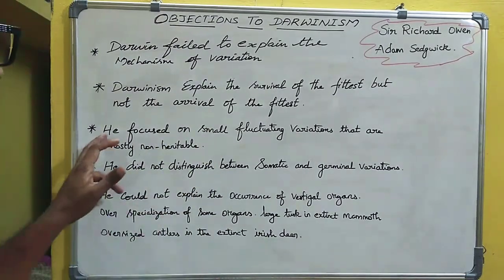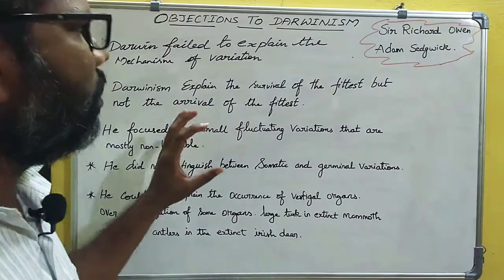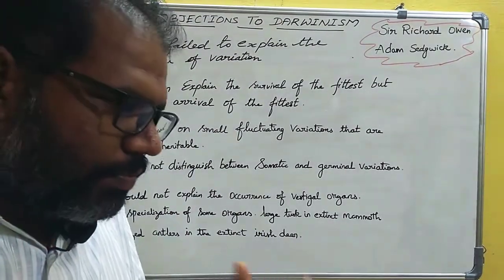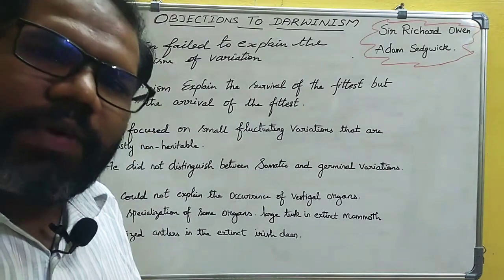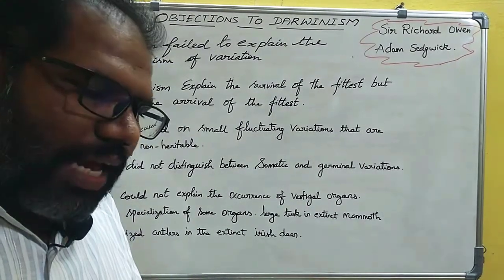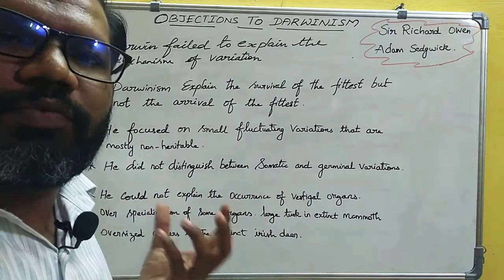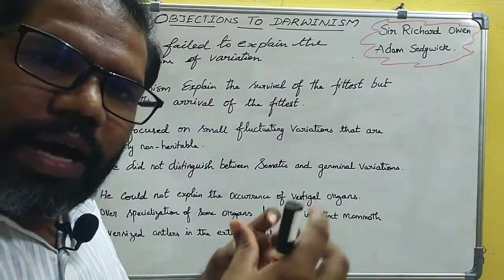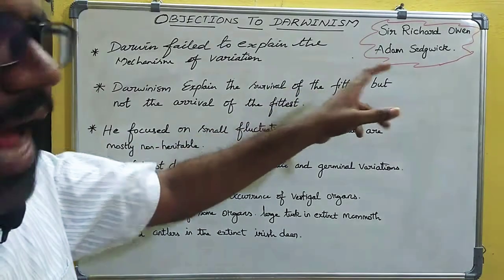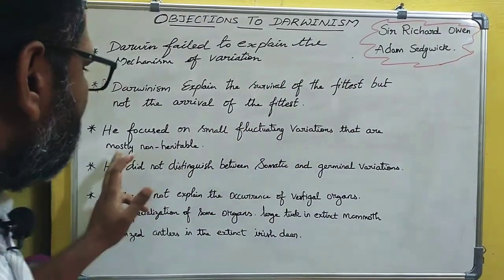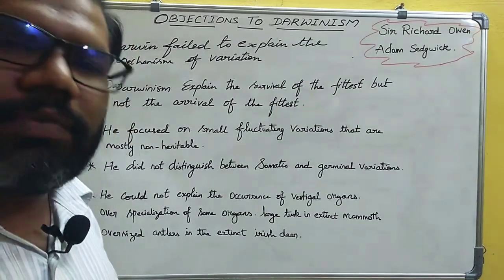Darwin focused on small fluctuating variations — there are little variations within a species. From one point of view, these variations accumulate: variations add up and add up within a species, eventually giving rise to a new species. However, Sir Richard Owen and Adam Sedgwick pointed out that small fluctuating variations are mostly not heritable.